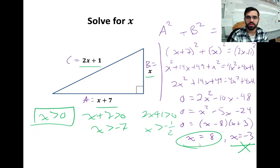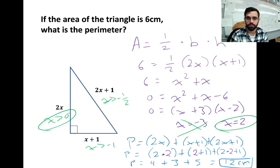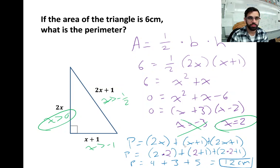This problem is how it's going to be written on your quiz. So if you're going to study but have short time, start with this one. The area of the triangle is 6 cm² — what is the perimeter? This is similar to the rectangle problem: we'll set up an equation with the area to solve for x.